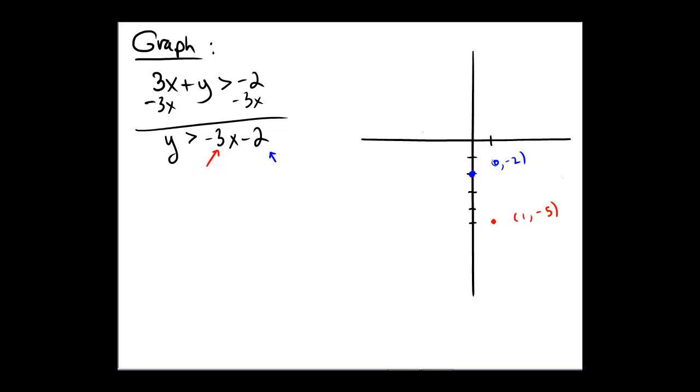Because the inequality is 'greater than' as opposed to 'greater than or equal to,' we're going to draw our line as a dotted line. Dotted line means up to and not quite including, as opposed to a solid line which would mean up to and including. Notice I've drawn a dotted line to the best of my ability.